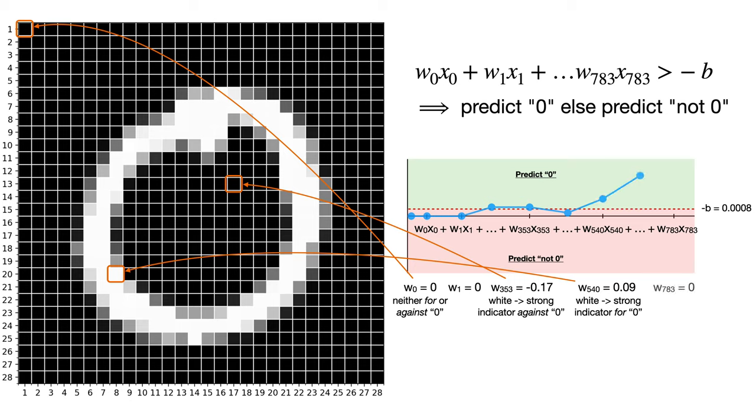Closing out this particular example, you can see we end up with a final score of 0.05, far above the 0.0008 threshold, so our model predicts that this image is a zero.